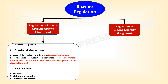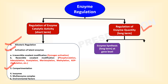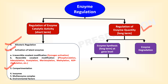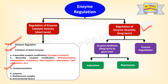Previously I have discussed allosteric regulation, activation of latent enzymes, and compartmentation. Today in this video I am going to discuss the regulation of enzyme quantity. Enzyme quantity is regulated by two mechanisms: enzyme synthesis at the gene level and enzyme degradation. Enzyme synthesis at the gene level is controlled by either induction or repression.